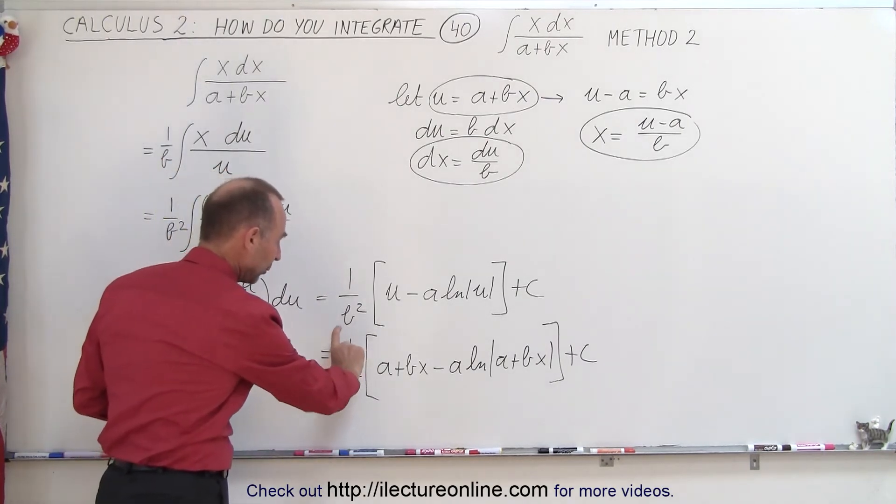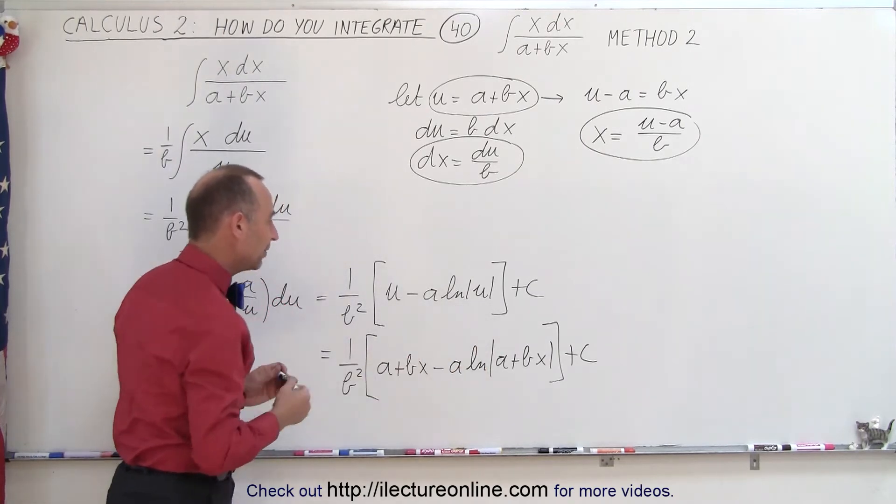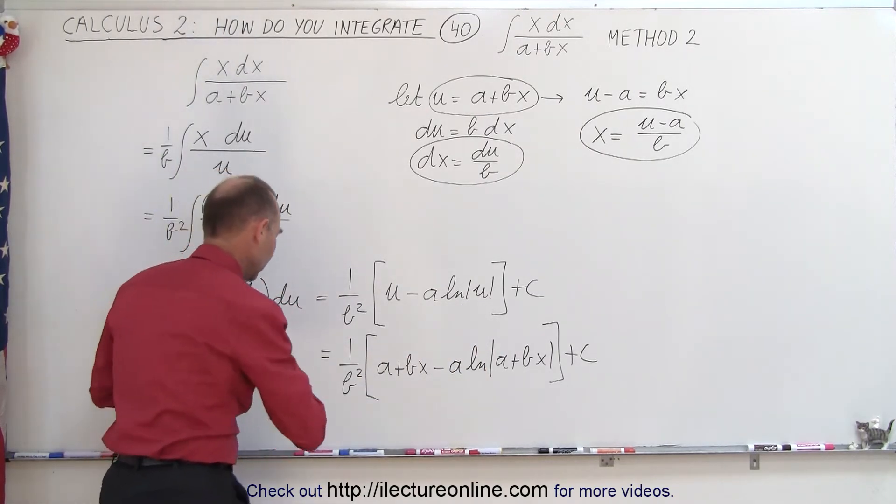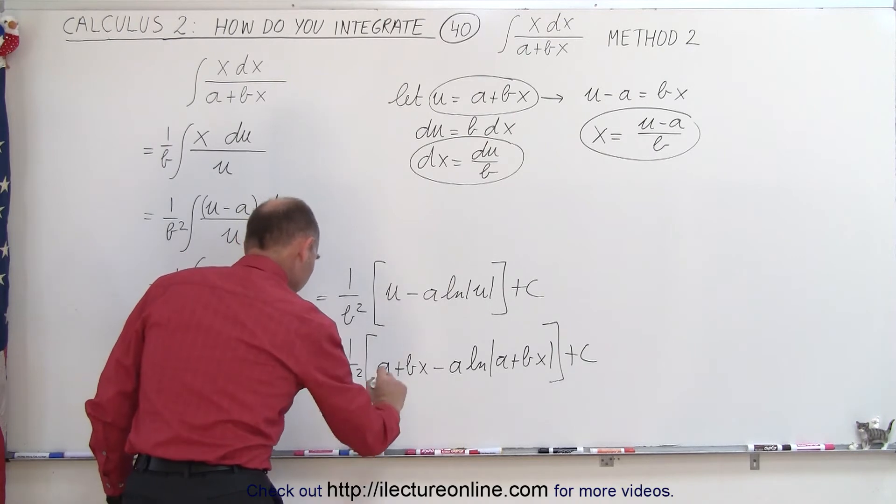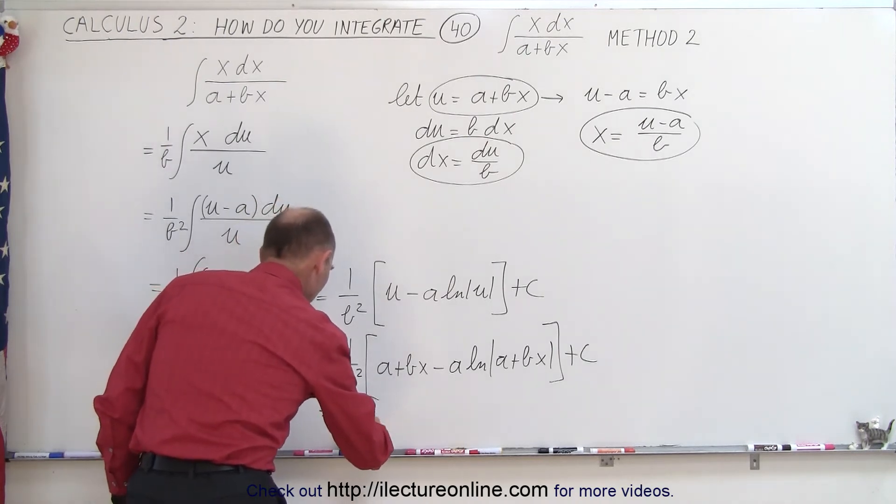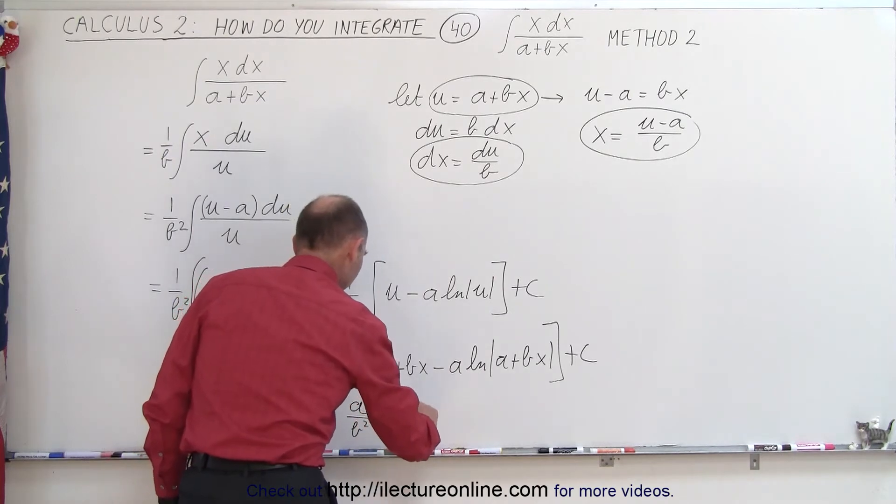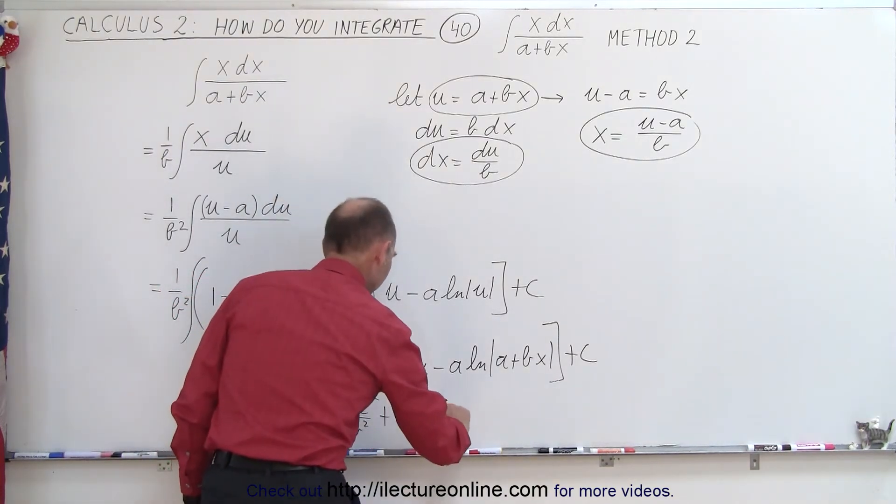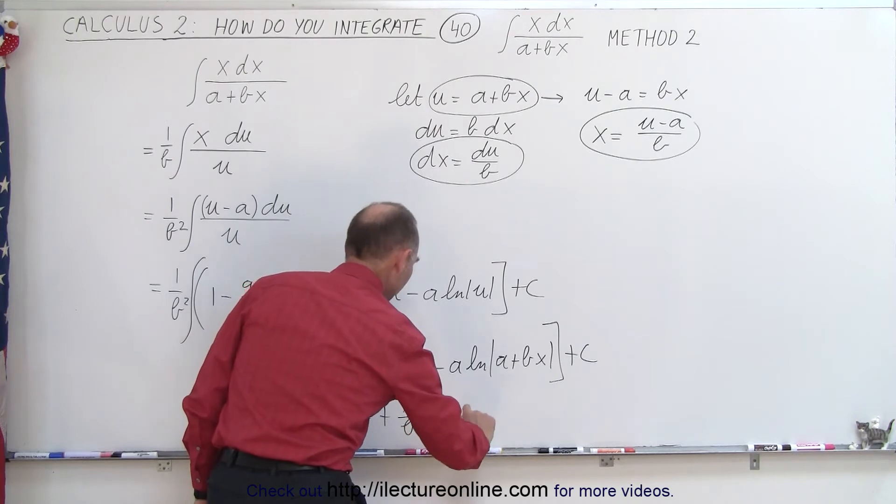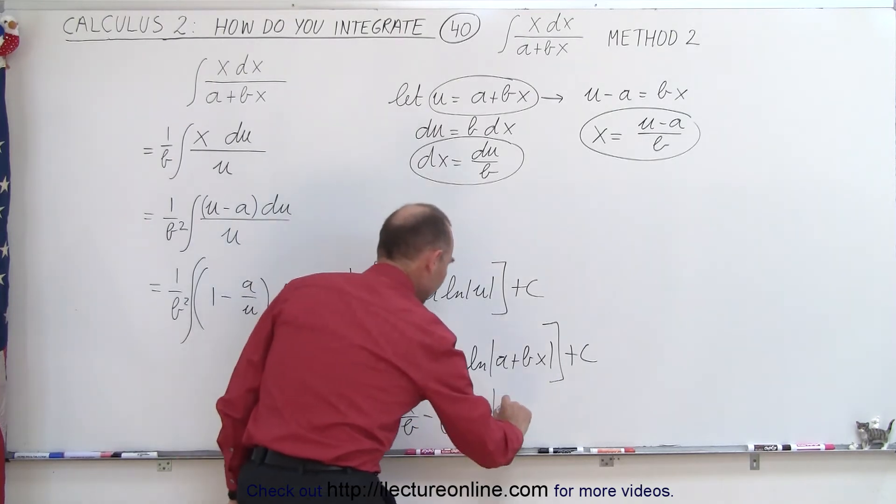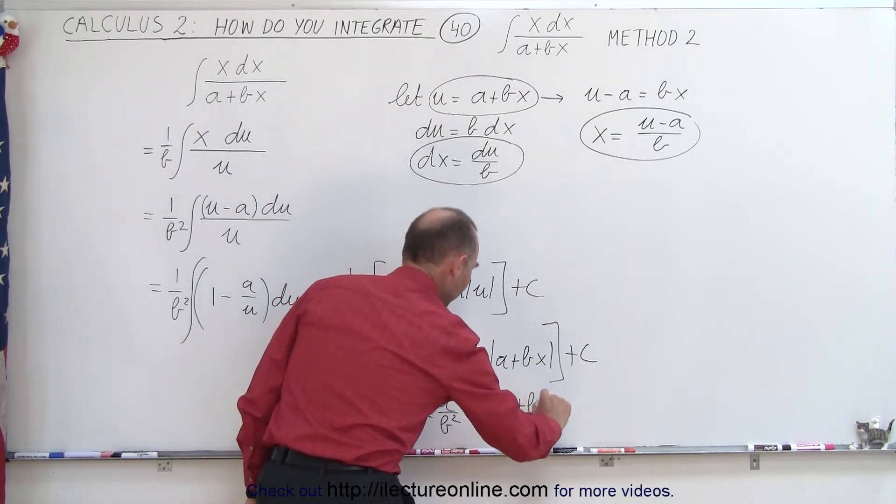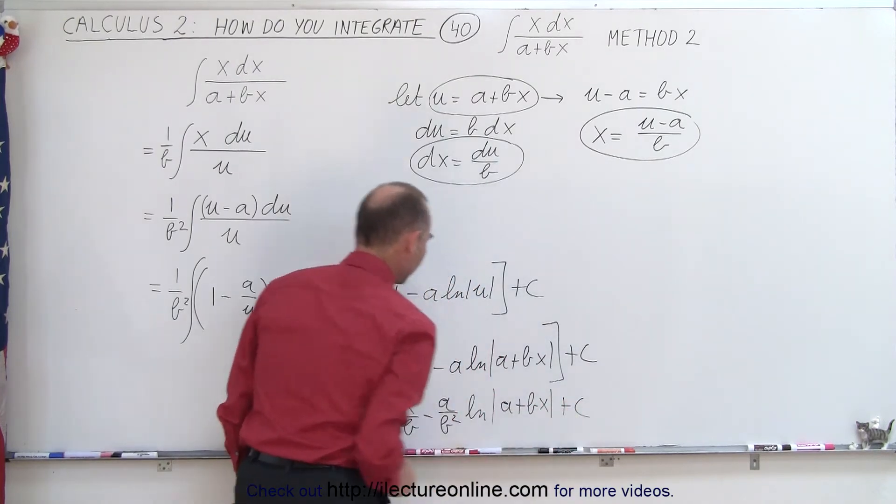So now let me show you how we can get the exact same answer we got in the previous video. What we're going to do here is we're going to multiply the 1 over b squared with what we have in there to see what we get. So this is equal to, let's see we have a over b squared plus x over b minus a over b squared times the natural log of a plus bx plus c the constant of integration.